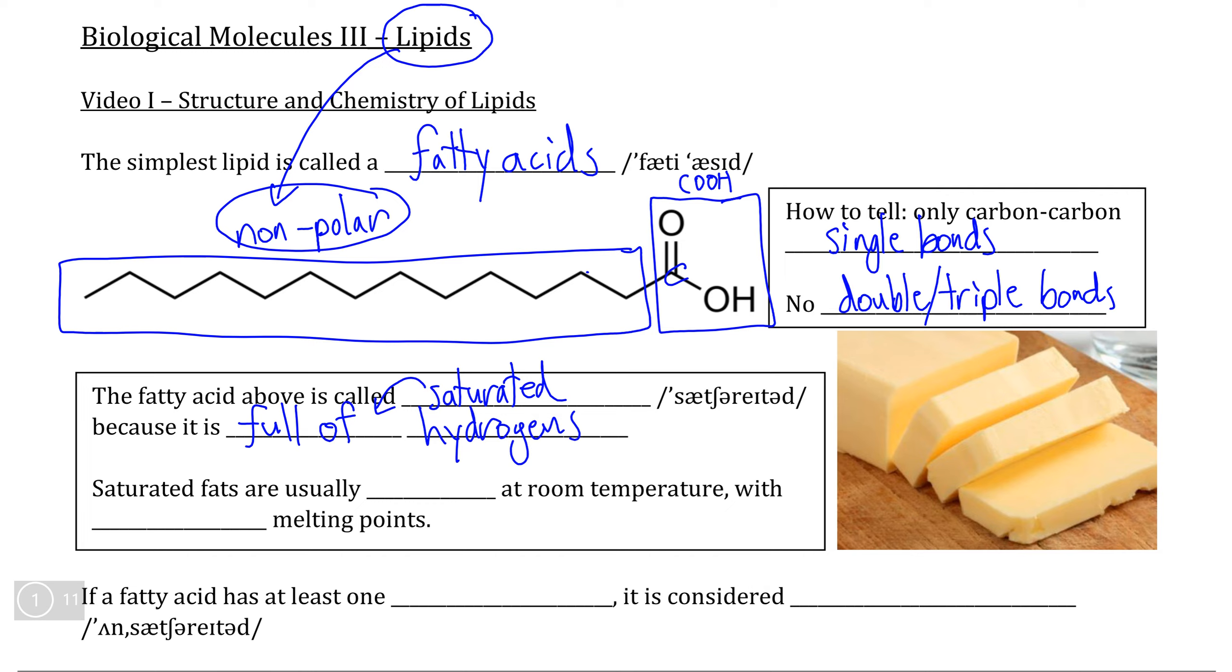For example, if we look at any interior carbon, there are two carbon to carbon bonds, meaning that we can connect two hydrogens to each of the interior carbons.